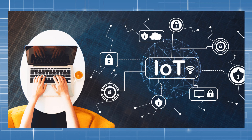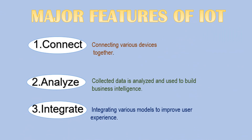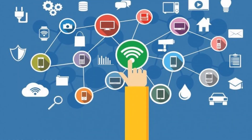In summary, the three main aspects of how IoT works are based on connecting data, analyzing data, and integrating data — and this is the best possible smart system. I hope you gained a basic understanding of the features of IoT. See you in the next video.